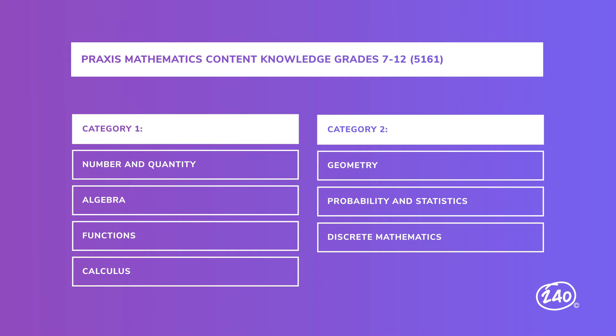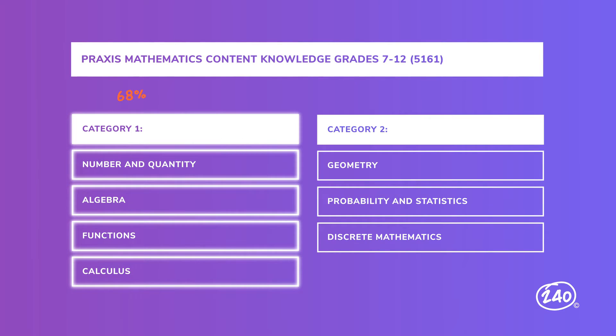Oh, I almost forgot to give you some good news. While the math is pretty tricky on this test, an on-screen graphing calculator is provided. The first category as a whole is worth about 68% of your exam, which will be about 41 questions.